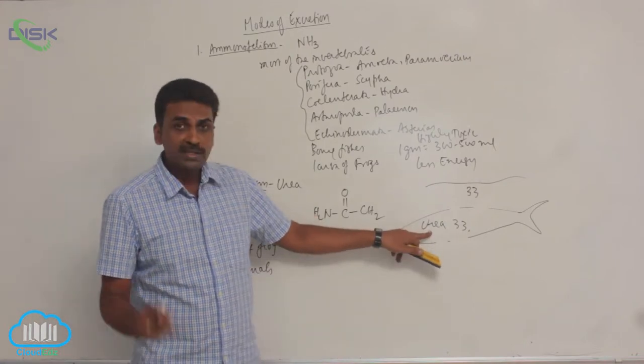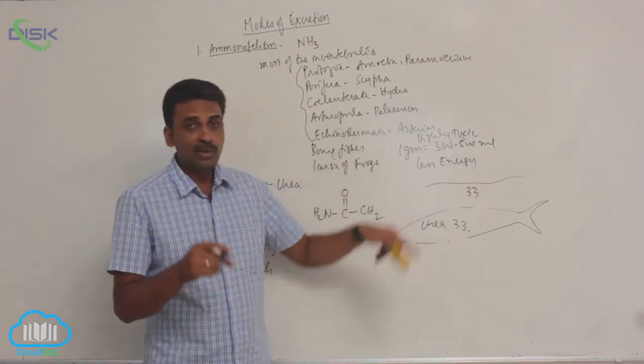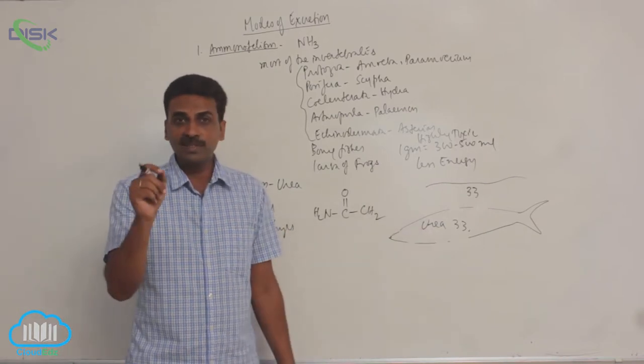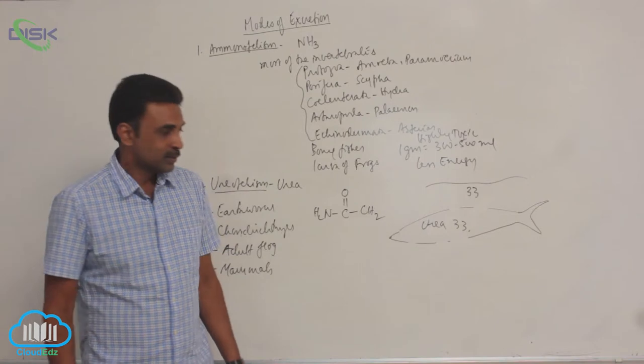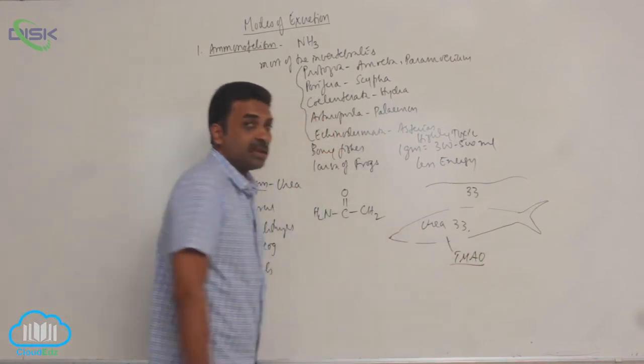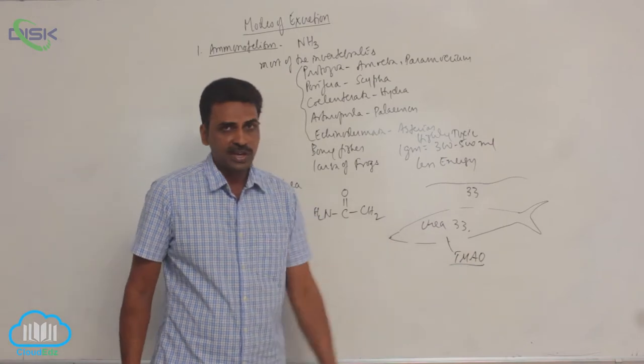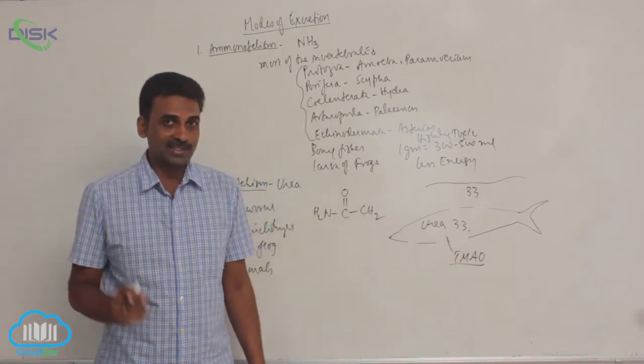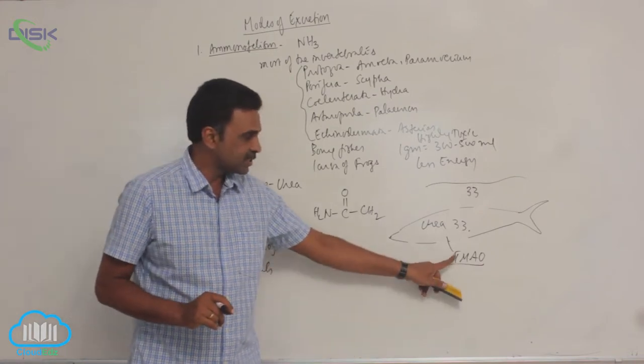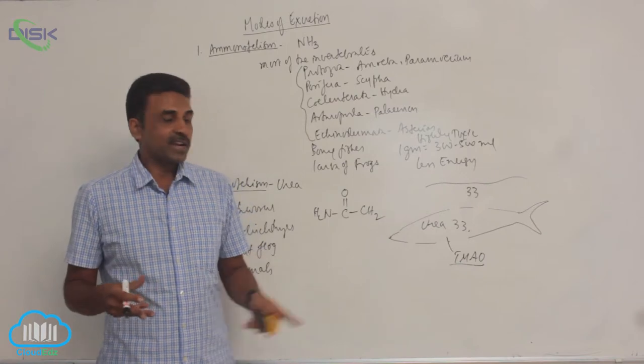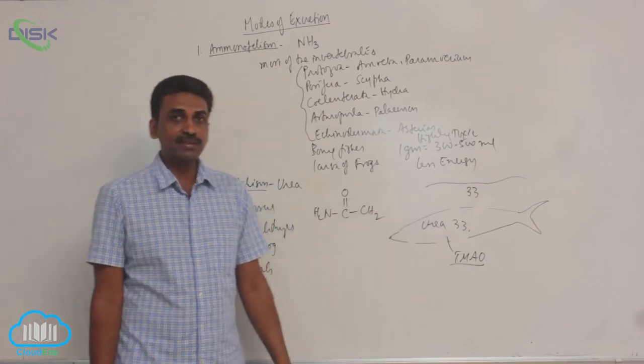Now urea is poisonous, though less poisonous when compared to ammonia. Cartilaginous fishes and molluscs contain trimethylamine oxide to protect their proteins against the poisonous effects of urea.